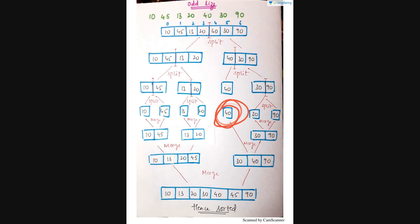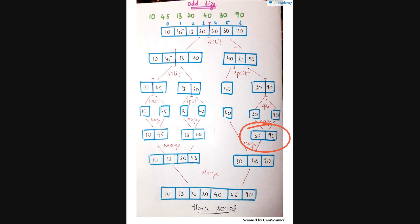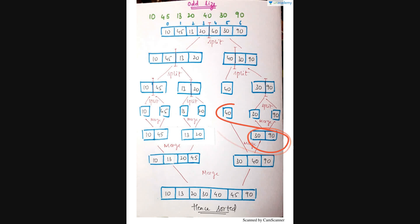For the right part, 40 remains as a single element. We combine 30 and 90 — 30 is smaller, so 30 comes first, then 90. Now merging 40 with the pair 30, 90: the smallest is 30, then comes 40, then 90. So we get 30, 40, 90 as one sorted part.